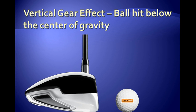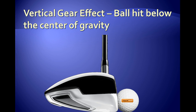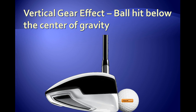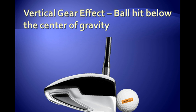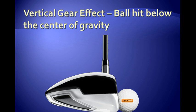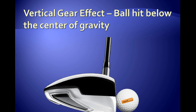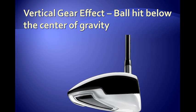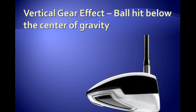So as the club comes into the ball, if it is hit below the center of gravity, that club head twists a little bit and comes down. As it does, you can see the ball starts to spin up a little bit and the face angle comes down. So the ball is going to launch lower and is going to have a lot of spin on it.